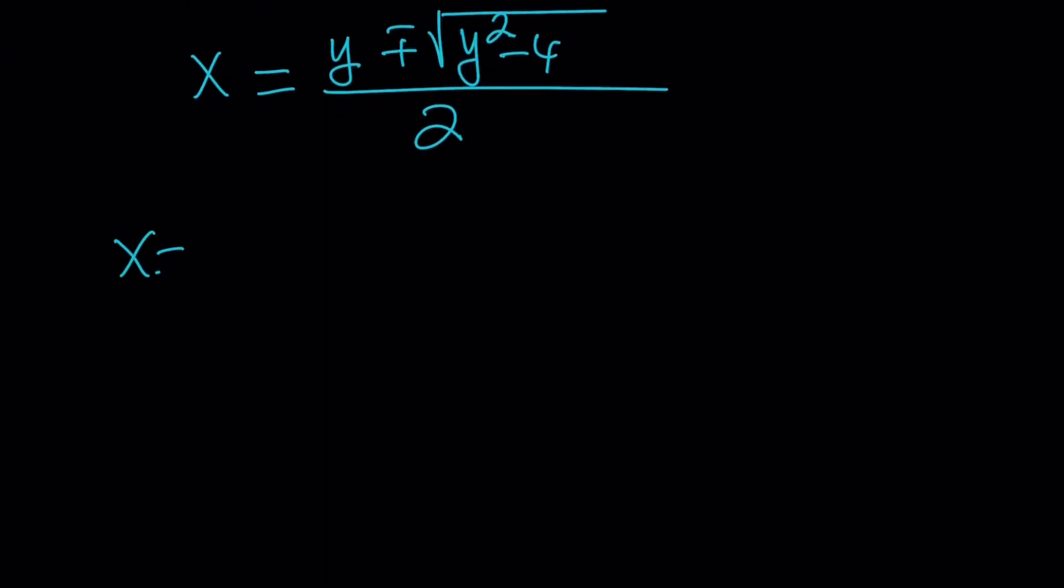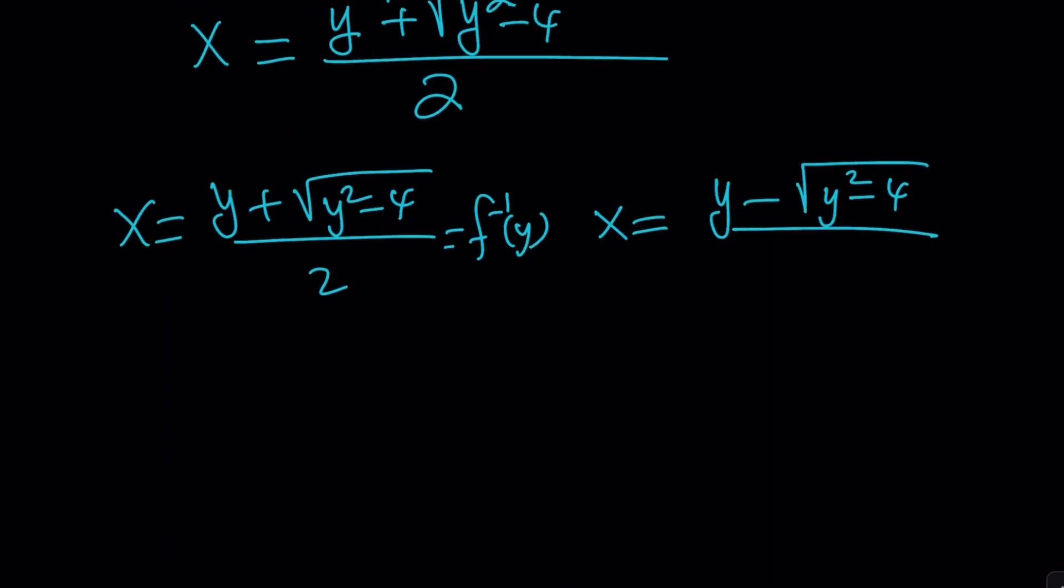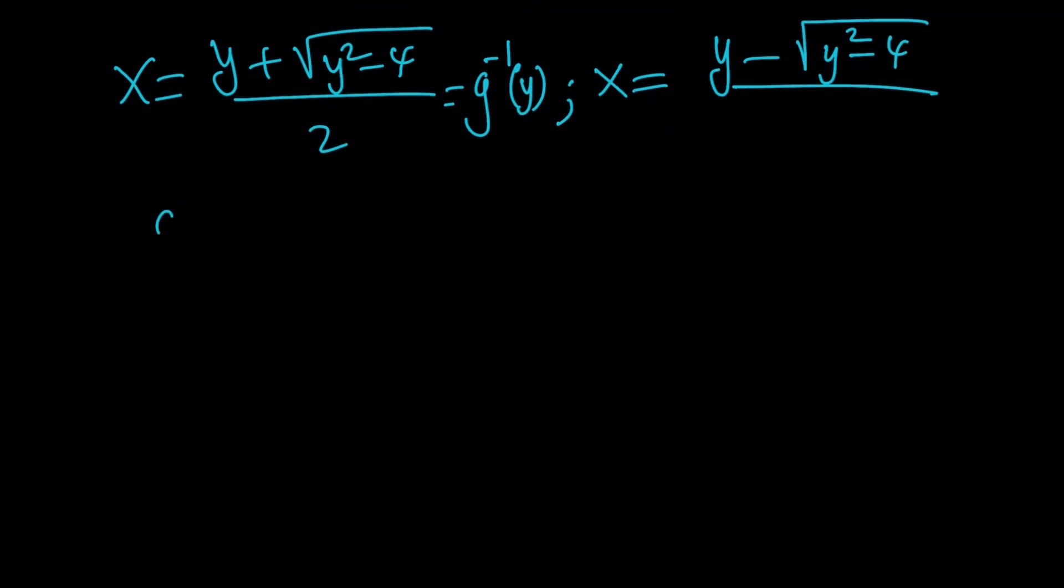So we're going to consider two solutions, x sub 1 and x sub 2. This kind of gives us x as f inverse of y. We can set this equal to f inverse of y. Or actually, is it g? Yeah, I think we called it g. So it should probably be g inverse of y. From here, we can find g inverse of x. All we have to do is replace this y with x. That gives you g inverse of x equals x plus the square root of x squared minus 4 over 2.